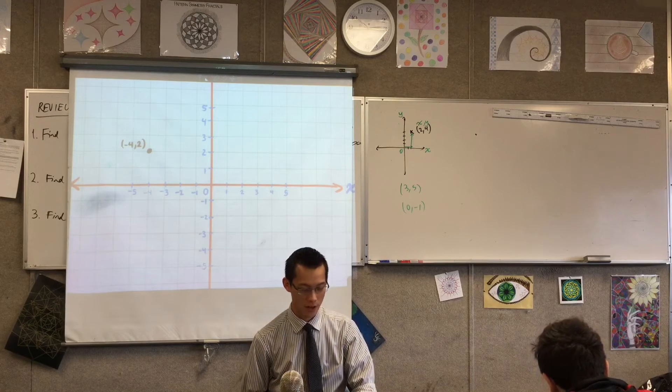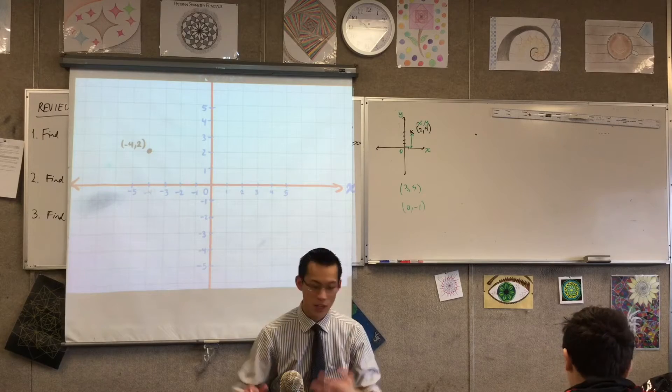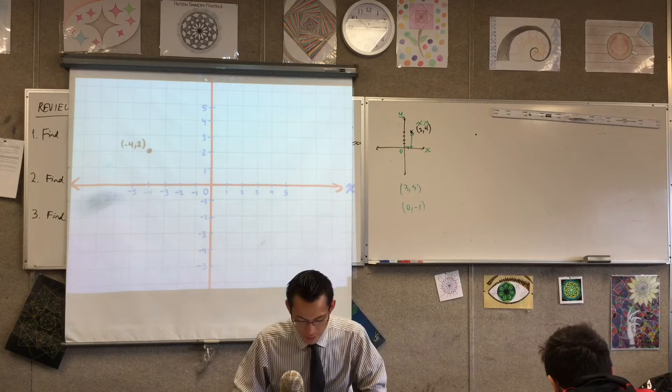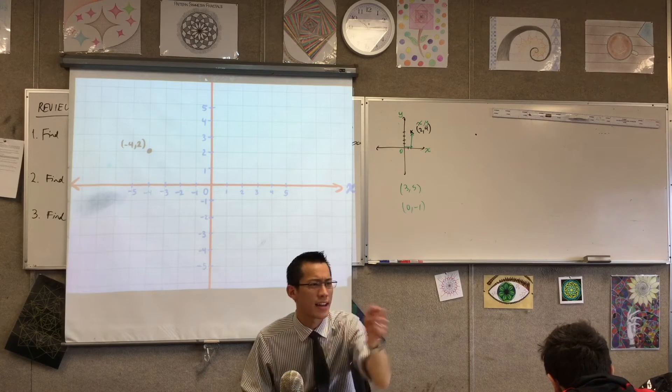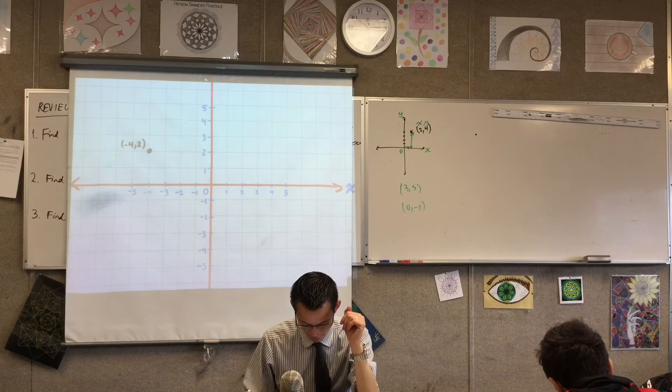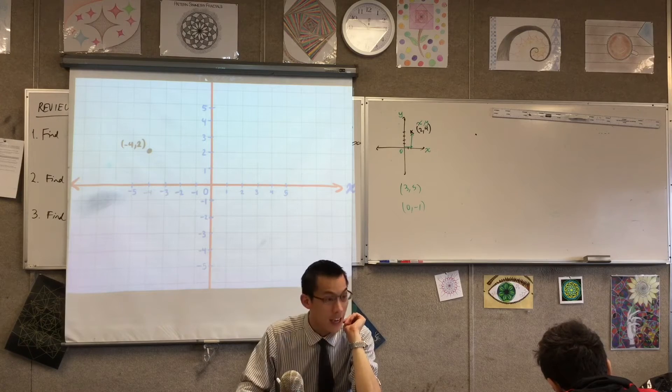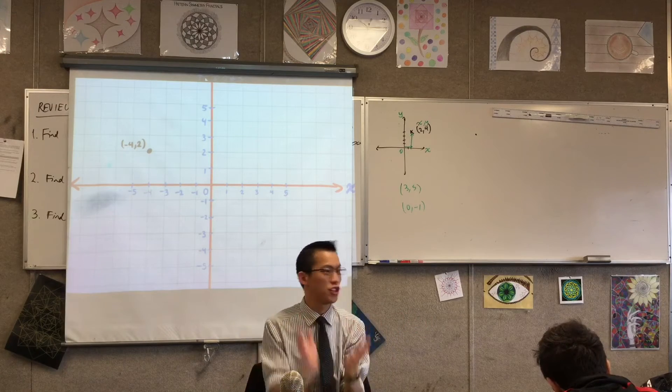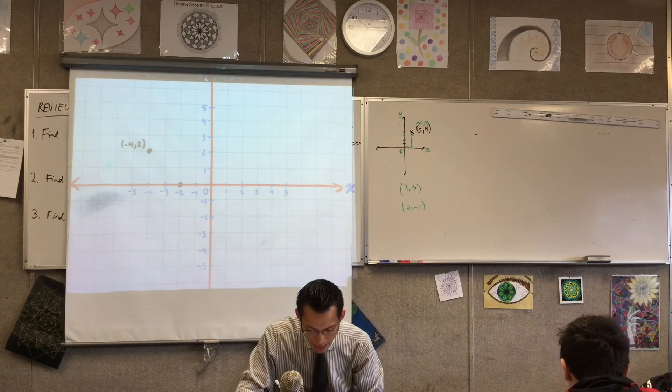All right, I've done my first one, four more to go. Negative 2 comma 0, where's that? Yeah, that's it, isn't it? The zero means you don't have to go up and down, so that is where negative 2 comma 0 is, right.